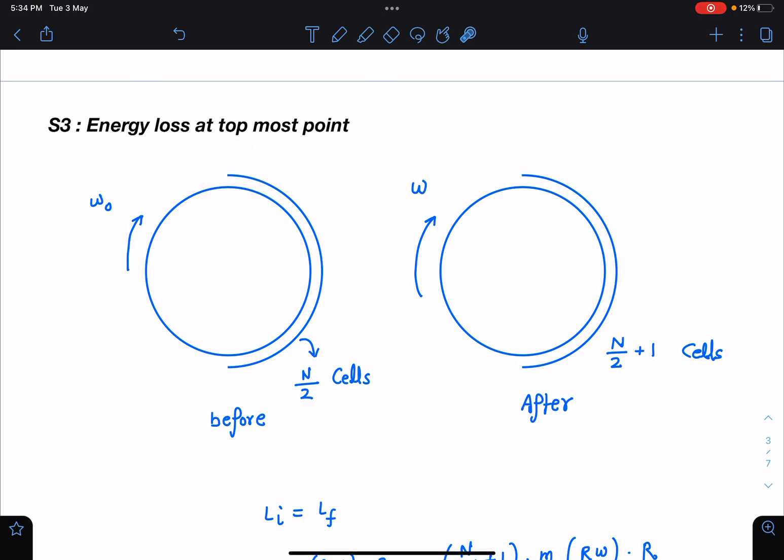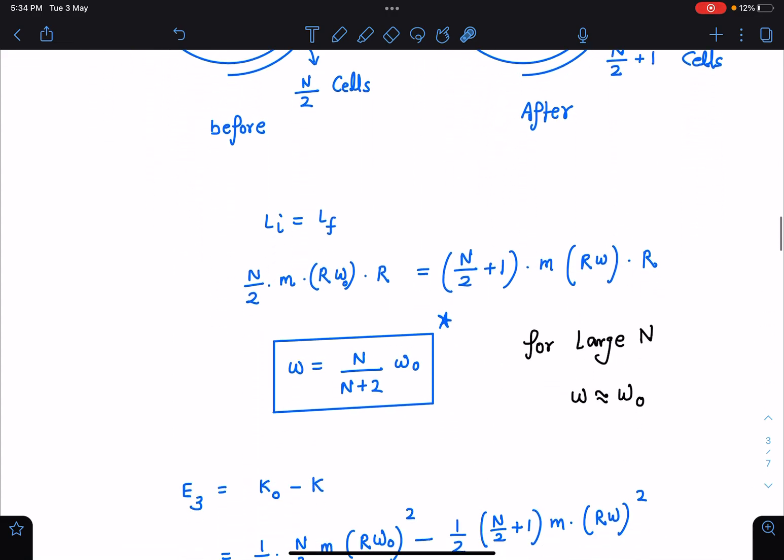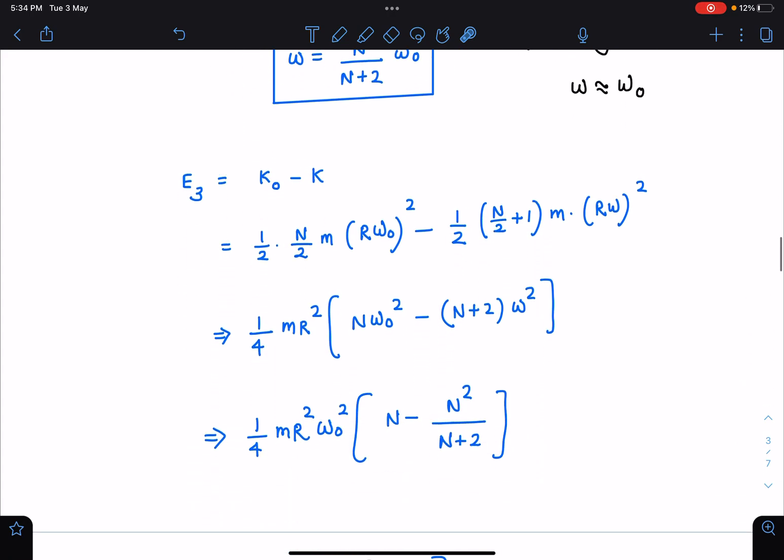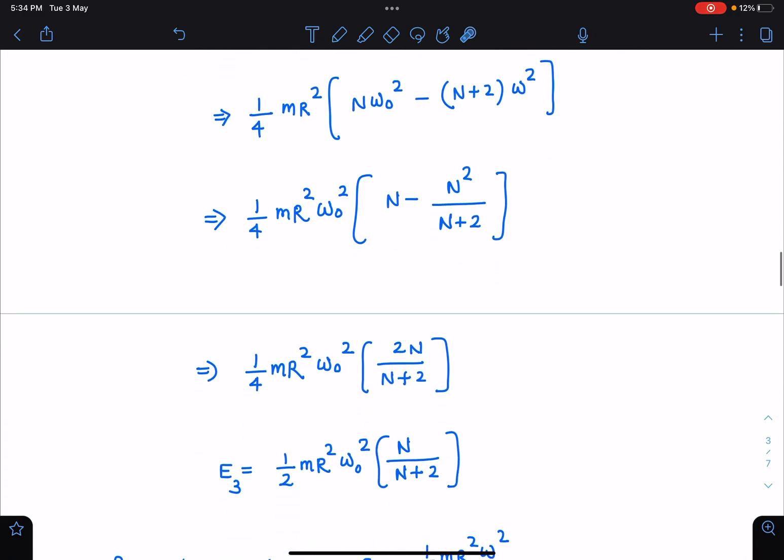Now if you look at this element just before and just after, here it's kinetic energy and here it's kinetic energy, and that difference is the energy loss. So E3 I am writing as the energy before heating and another one is the energy just after. You can see here in this part half m v square minus half. The next mass in this wheel will become N/2 plus 1 times m into v square.